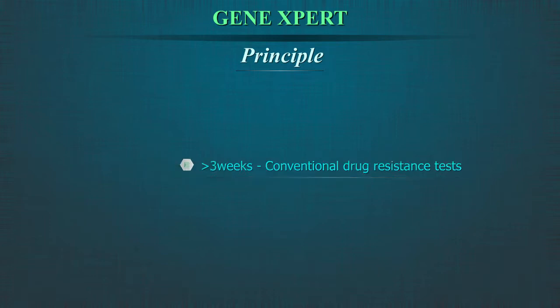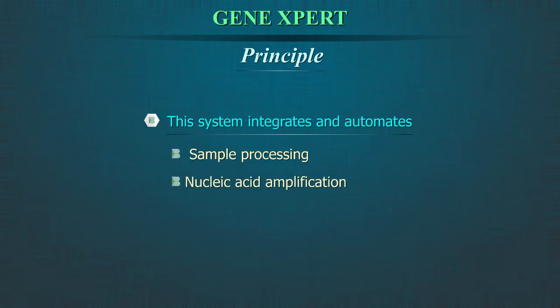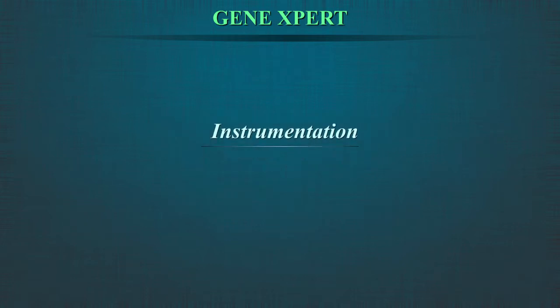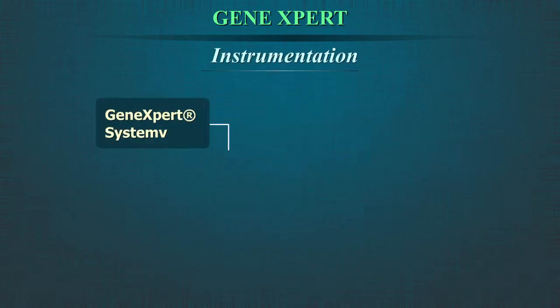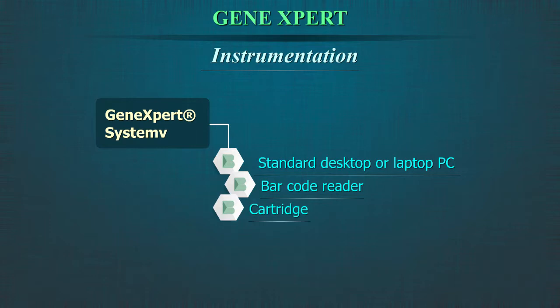This system integrates and automates sample processing, nucleic acid amplification, and detection of the target sequences. The only instrumentation required is the GeneXpert system attached to a standard desktop or laptop PC, a barcode reader, and a GeneXpert cartridge.